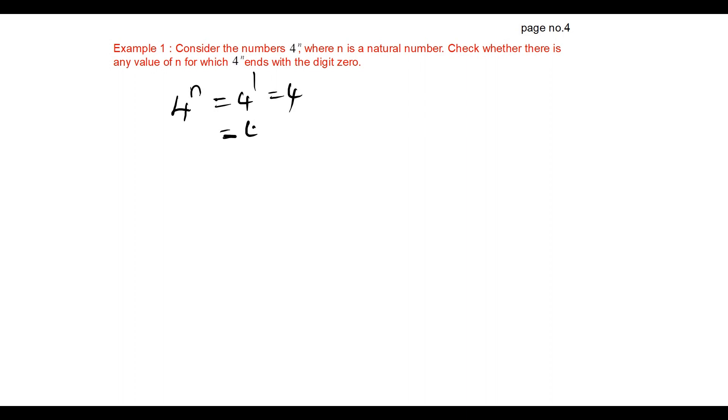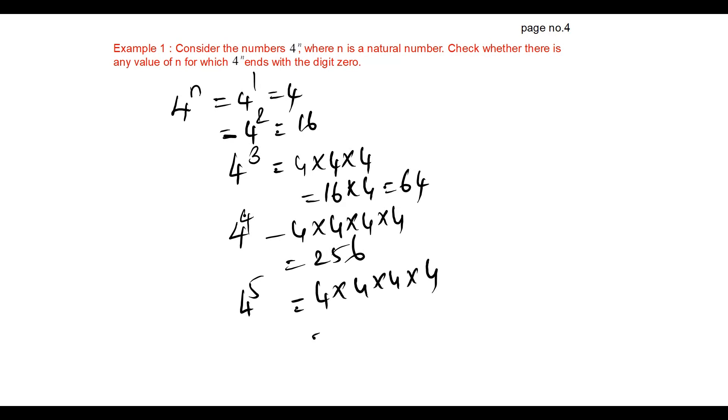For example, apply the natural numbers for N. 4 power 1 is 4, 4 power 2 is 16, 4 power 3 is 4 into 4 into 4 which is equal to 64. 4 power 4 is 4 into 4 into 4 into 4 which is equal to 256. 4 power 5 is 1024.